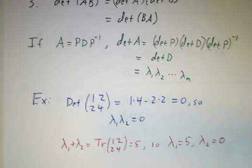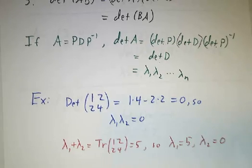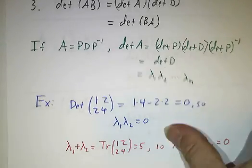Since the trace was 5, the other one has to be 5. So we'll call λ2 = 0 and λ1 = 5. It doesn't matter what order you put them in. The eigenvalues are 0 and 5, or 5 and 0, same thing.